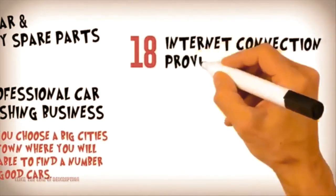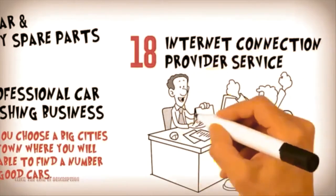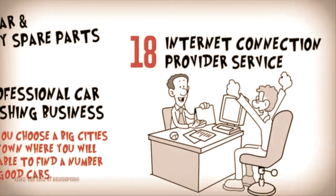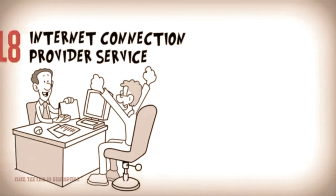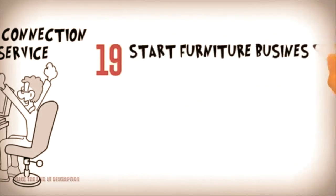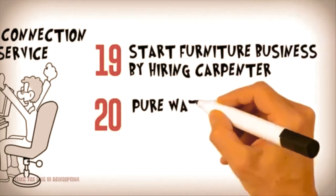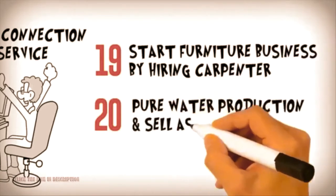Eighteen: internet connection provider service. You can provide fast internet connection at affordable monthly rates and manage it well enough to make tons of money. Nineteen: start a furniture business by hiring a carpenter. Twenty: pure water production and sell as sachet bagged or bottled water.